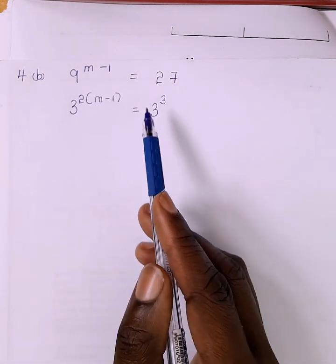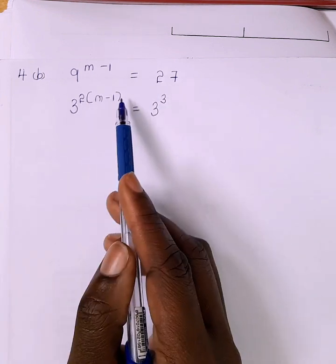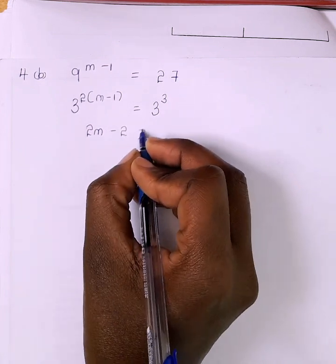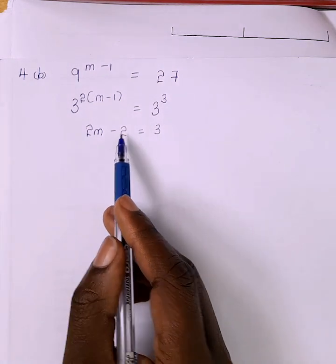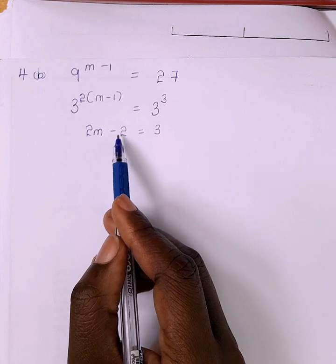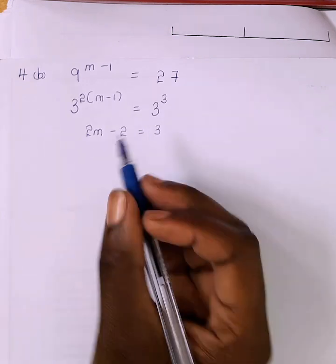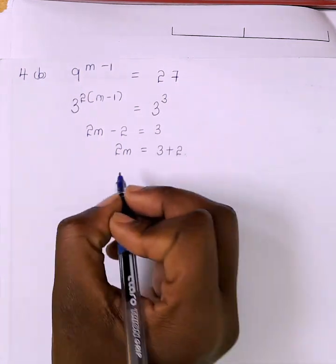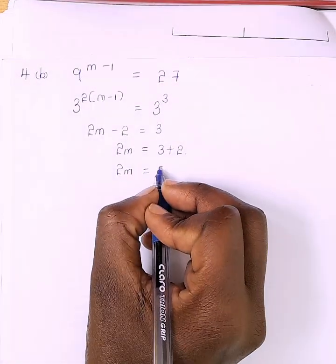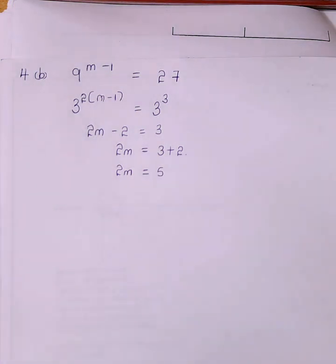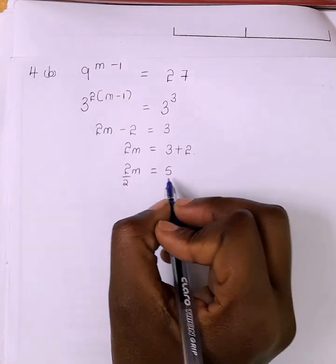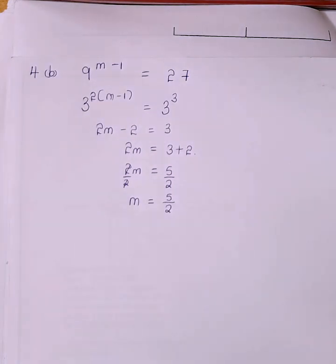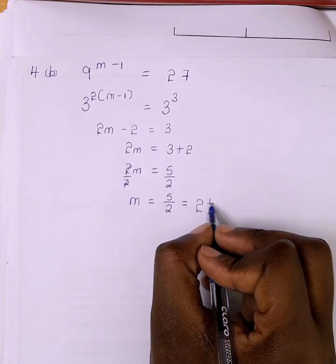We say 2(m minus 1) equals 3. We expand the bracket: 2 times m is 2m, 2 times minus 1 is minus 2. So 2m minus 2 equals 3. We shift the minus 2 to the other side — it becomes positive 2. So 2m equals 3 plus 2, which gives 2m equals 5. We divide both sides by 2, so m equals 5 over 2, or written as a mixed fraction, 2 and a half.